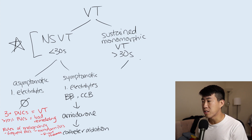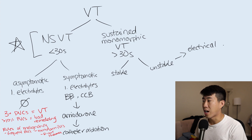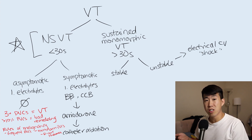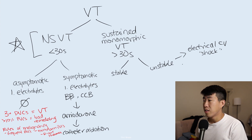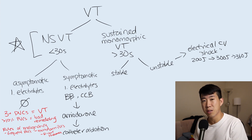For sustained monomorphic VTAC, split patients into stable or unstable. If unstable, immediately electrically cardiovert. If the patient is awake, synchronized cardioversion at 100 joules can be done. If they're significantly unstable or pulseless, start directly with a 200 joule shock, then up-titrate to 300 joules and up to a maximum of 360 joules.